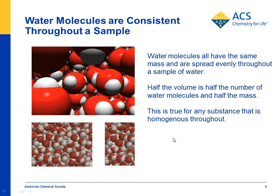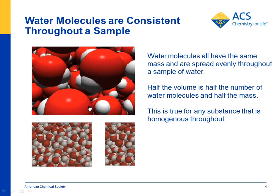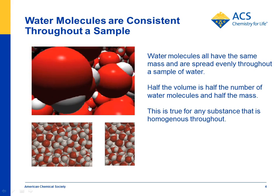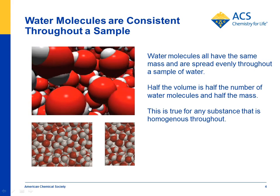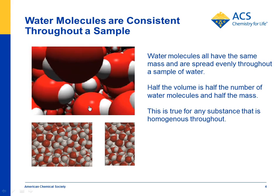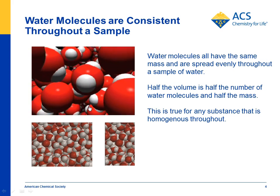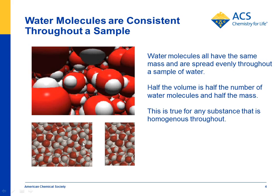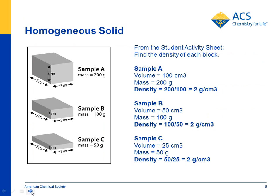But why is that? The reason is because water is homogeneous throughout a sample. It's the size, arrangement, and mass of water molecules that is the same no matter where you go in the sample. So if you look at a sample of water and you know the mass and the volume, if you then take half the volume, you'll have half the mass, because it's consistent throughout. It's true for any substance that's homogeneous throughout.